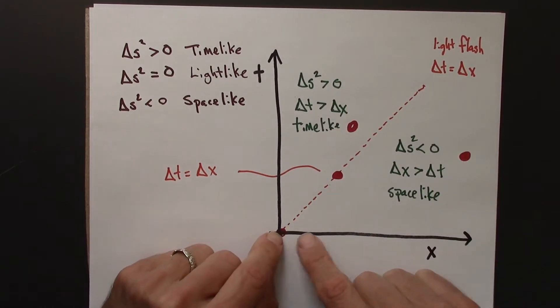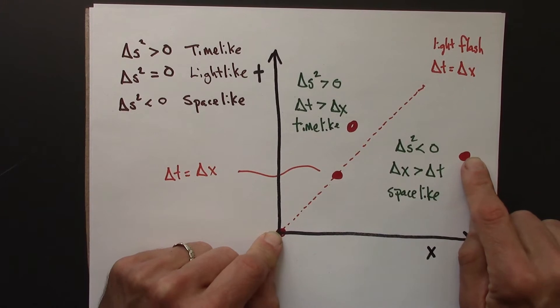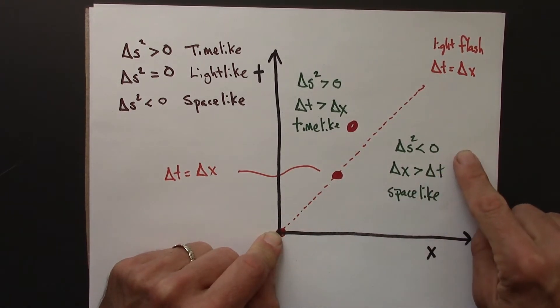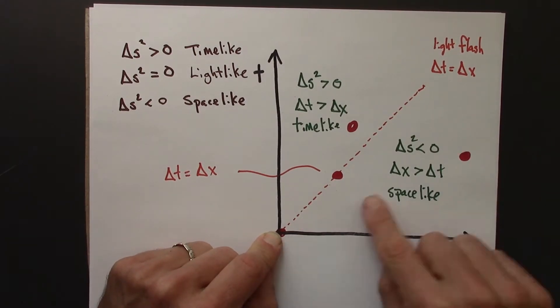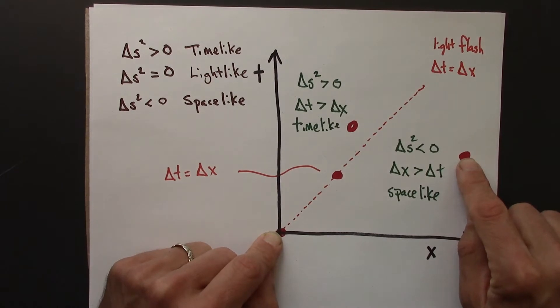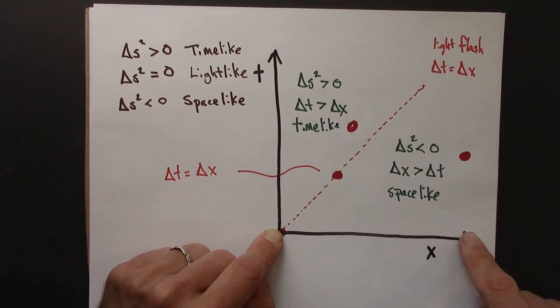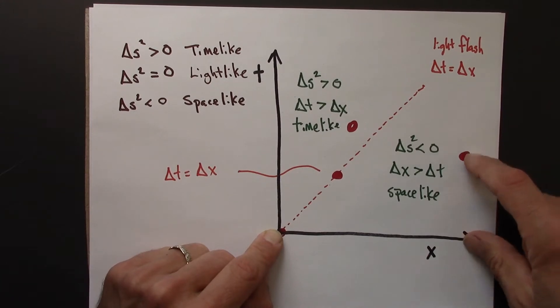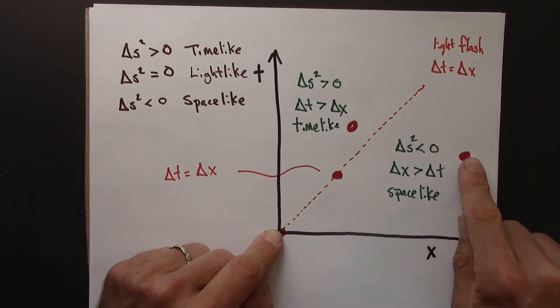And we also know that these two events cannot be causally connected. That's because if there were a causal signal going from here to here, it would have to travel at faster than the speed of light. And as we've seen for causality, that's not possible. Why would it travel faster than the speed of light? Well the signal would have to get from here to here, it would have to travel at delta x that's greater than delta t. So it would have to travel faster than the speed of light. So that would not be possible.